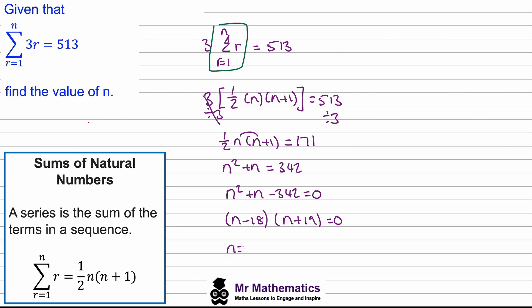So n will be equal to positive 18 and n will be equal to negative 19. But we're looking at the natural numbers and natural numbers are integers starting from one, so this negative 19 is not valid. In this case n will equal 18.